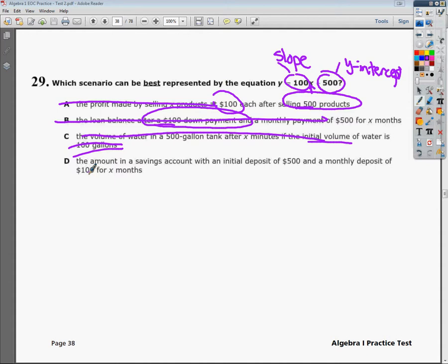So what we're going to do is look at it and say that the amount in a savings account with an initial deposit of 500. My initial deposit is 500, that matches.